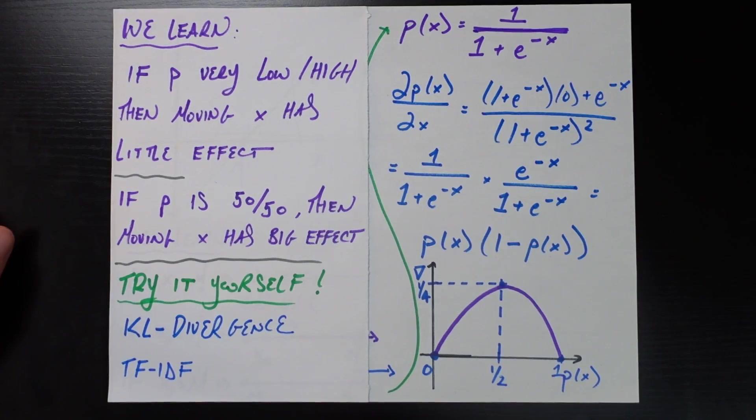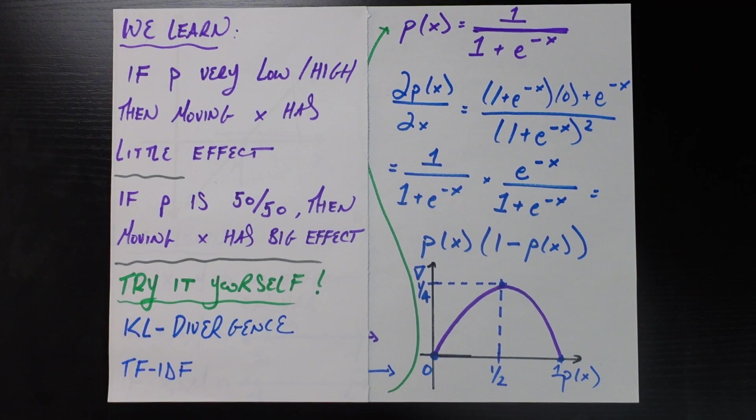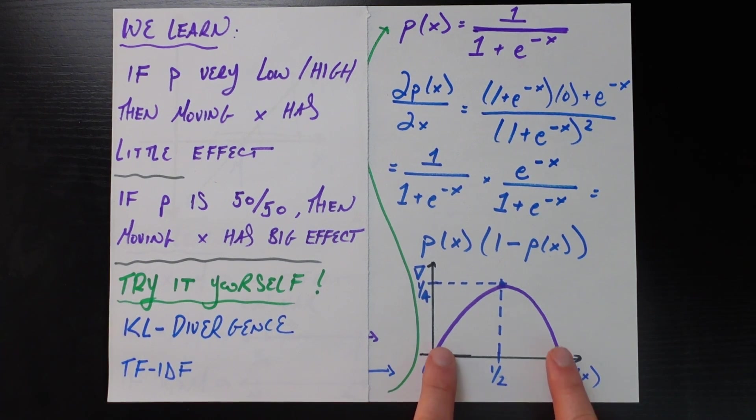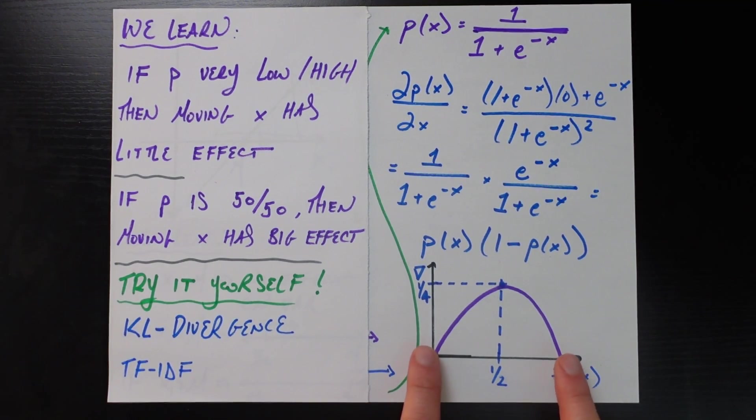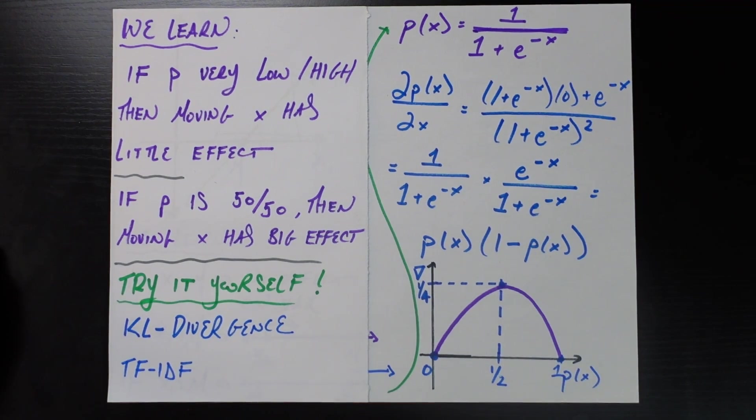That's what it's saying on the ends of this distribution, the derivative of this probability with respect to changing that argument, that feature x is going to have very little effect. On the other hand, if your probability is already around the 50% mark, which means that you're very close to equally uncertain about whether it's in the positive class or whether it's in the negative class, that's what it means for your predicted probability to be around 50%, then it's exactly there that changing your argument x, changing your feature x by a little bit is going to have the biggest effect.